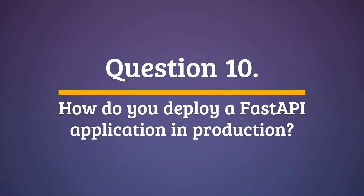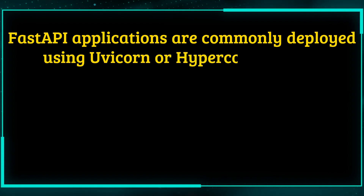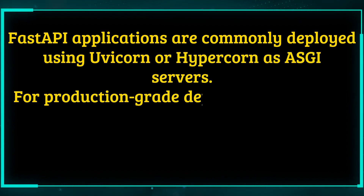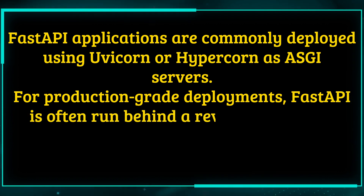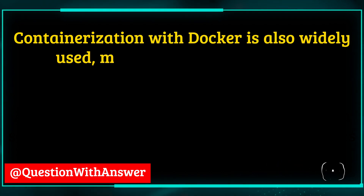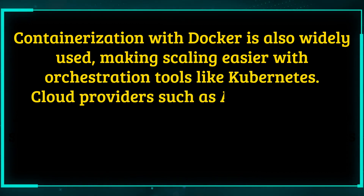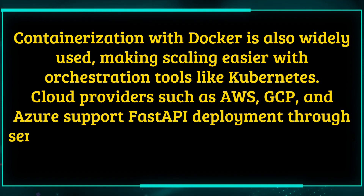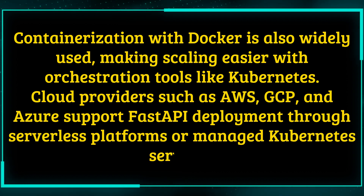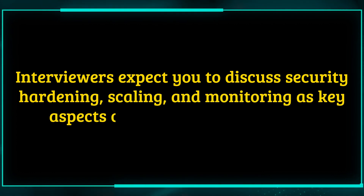Question 10: How do you deploy a FastAPI application in production? FastAPI applications are commonly deployed using Uvicorn or Hypercorn as ASGI servers. For production-grade deployments, FastAPI is often run behind a reverse proxy like Nginx or Traefik, with process managers like Gunicorn with Uvicorn workers. Containerization with Docker is also widely used, making scaling easier with orchestration tools like Kubernetes. Cloud providers such as AWS, GCP, and Azure support FastAPI deployment through serverless platforms or managed Kubernetes services. Key aspects of production deployment include security hardening, scaling, and monitoring.